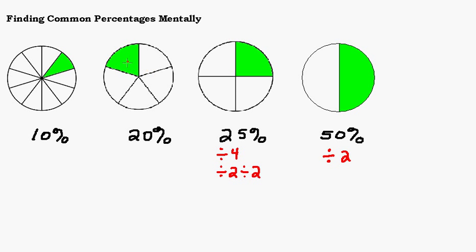20% we can see is one fifth of a circle. So if we divide by 5, we'll be able to get 20% of a number. Now 10% is one tenth of a circle, so we would divide by 10.